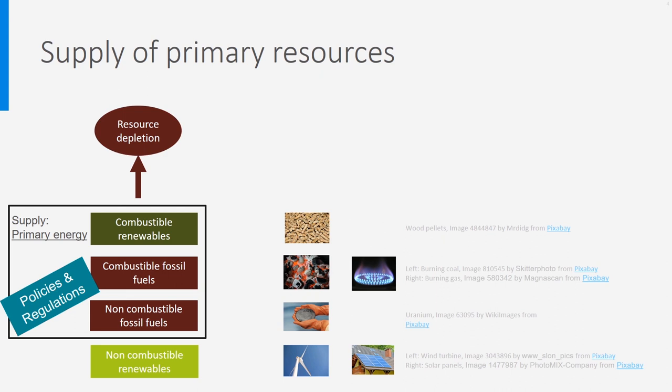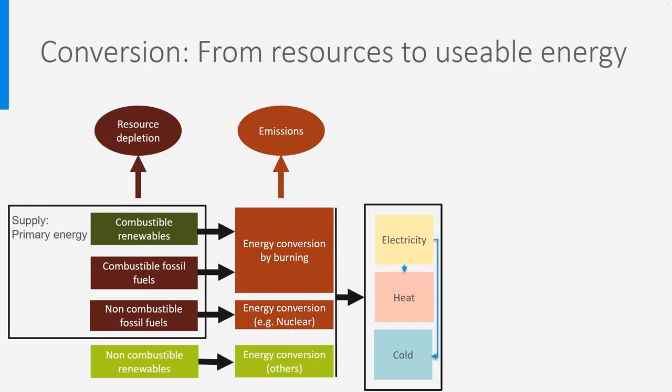Let's look now at how to convert these primary resources into usable energy. Usable forms of energy in buildings are electricity, heat and cold, as you can see in the middle of the slide. Be also aware that electricity itself can be used to produce heat or cold, as shown by the blue arrow, but that is not the subject of this lecture. Depending on the type of resource and the conversion method, emissions of harmful products may take place — think for instance of CO2 or NOx emissions or particulate matter. In this slide, the emissions are pictured in orange, just like the two upper conversion boxes. This is to indicate that emissions only take place during the burning process and processes like the nuclear one. In a green box, where conversion takes place based on non-combustible renewables, no such emissions are produced.